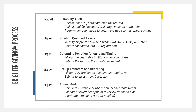You can see here, these are the five steps of the Brighter Giving process. Step one is a suitability audit. Step two is a positioning of your qualified assets. Step three is determining the donation amount and timing. Step four is the setup and transfers and reporting. And step five is a continual ongoing annual audit to keep you on track.